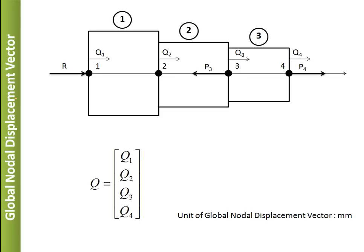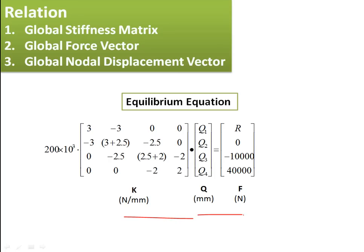The global nodal displacement vector is simply {Q1, Q2, Q3, Q4}, all unknown values to be found out, with units of mm. The equilibrium equation is K × Q = F. The unit check confirms: (N/mm) × (mm) = N, which is consistent. So the equilibrium equation has been generated.